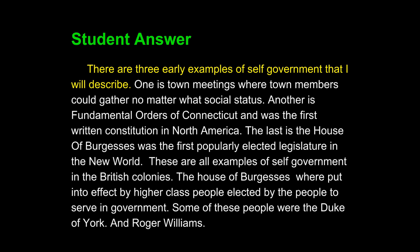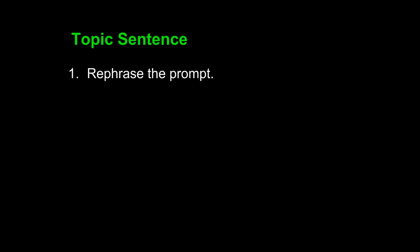Let's review what topic sentences are supposed to do. A topic sentence should achieve two tasks. The first is to rephrase the prompt — that means you will use language from the prompt itself in your topic sentence. The second is to add an answer. Sometimes this requires you to think, sometimes not, and we'll see, depending upon the prompt, how much thought you need to put into step two.